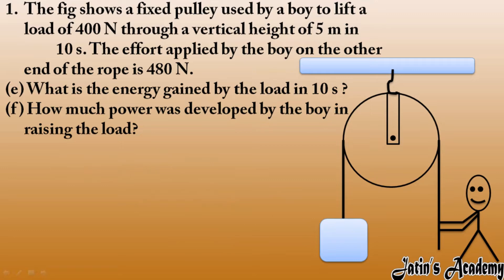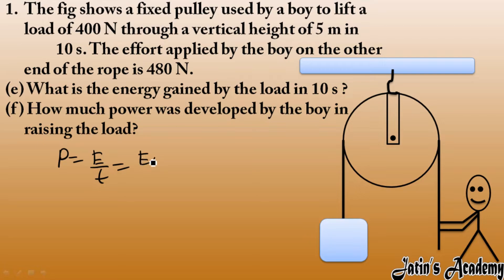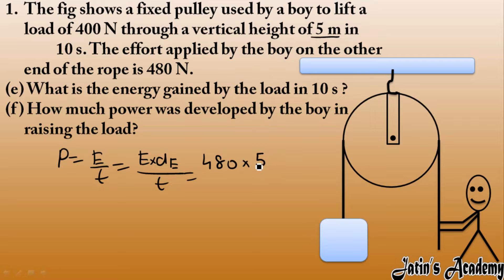Now we calculate the power developed by the boy while raising the load. Power equals energy divided by time. Energy given by the boy equals effort into displacement of effort, divided by time. Effort is 480 Newton, displacement of effort is 5 meters, and time is 10 seconds. So power equals 480 × 5 ÷ 10 = 240 watts.